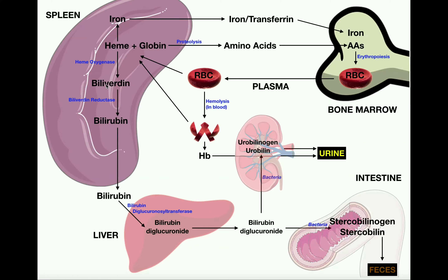Then an enzyme called biliverdin reductase is going to convert biliverdin into bilirubin. Now this bilirubin is going to have to be transported to the liver, where the remainder of the metabolism occurs.